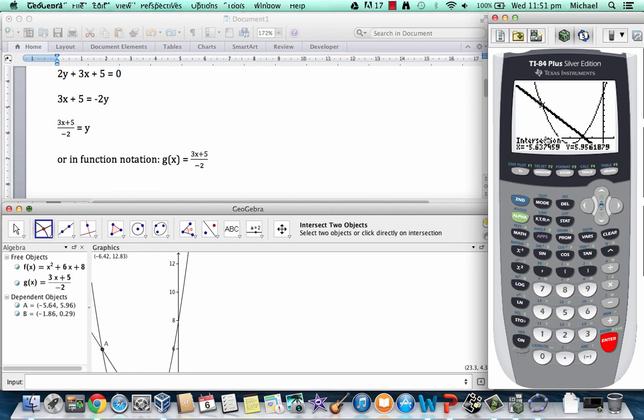So again these intersects are the values at which those two expressions are equal when x is equal to those numbers. So this is a way to find the answers using graphing functions on GeoGebra or on your graphing calculator.